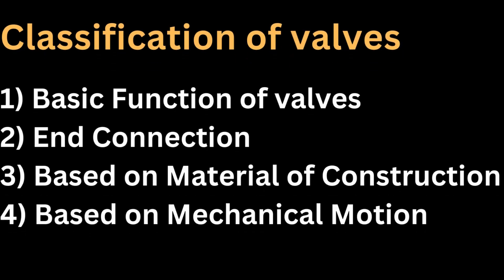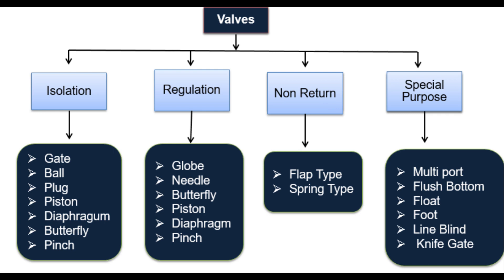Valves are classified mainly in four types: 1. Basic function of valves, 2. End connection, 3. Based on material of construction, 4. Based on mechanical motion. Based on function, valves are further classified into four types: 1. Isolation, 2. Regulation, 3. Non-return, 4. Special purpose.